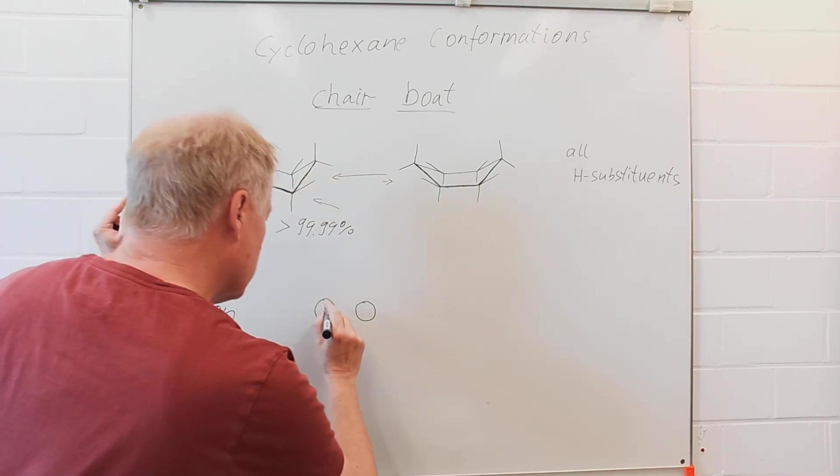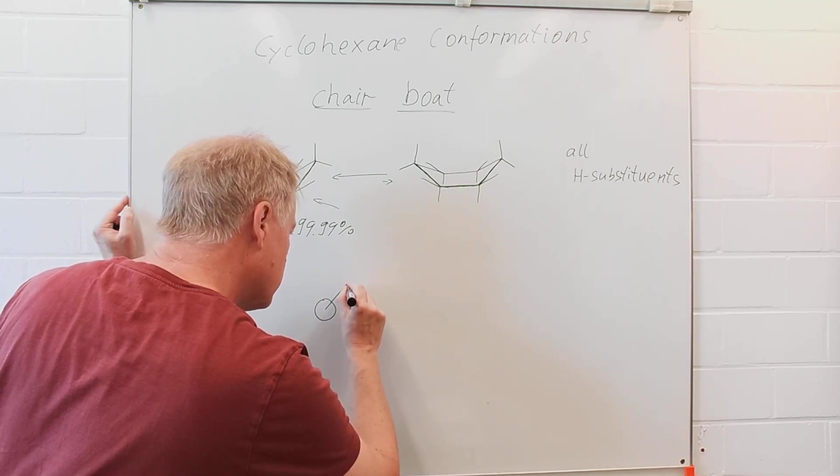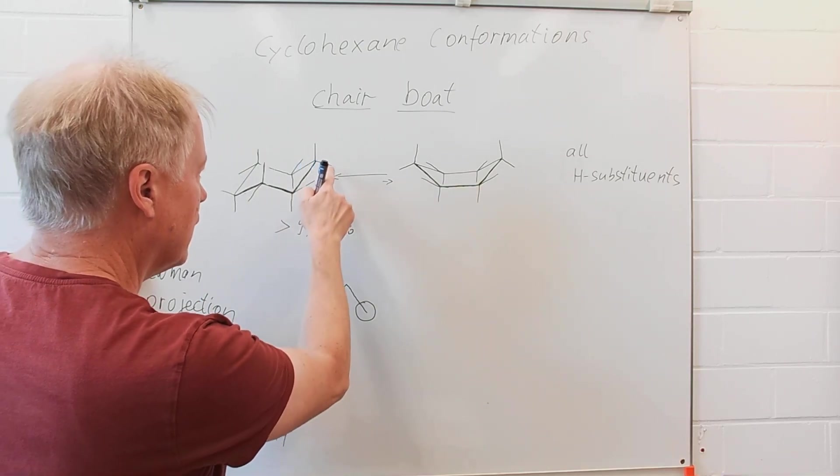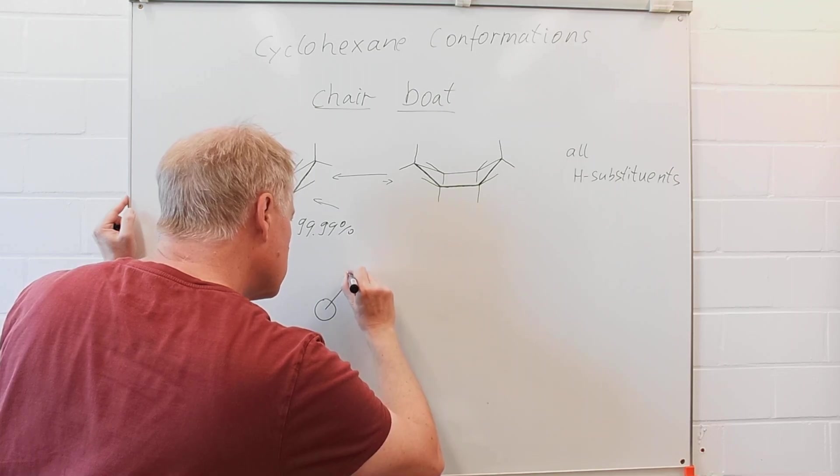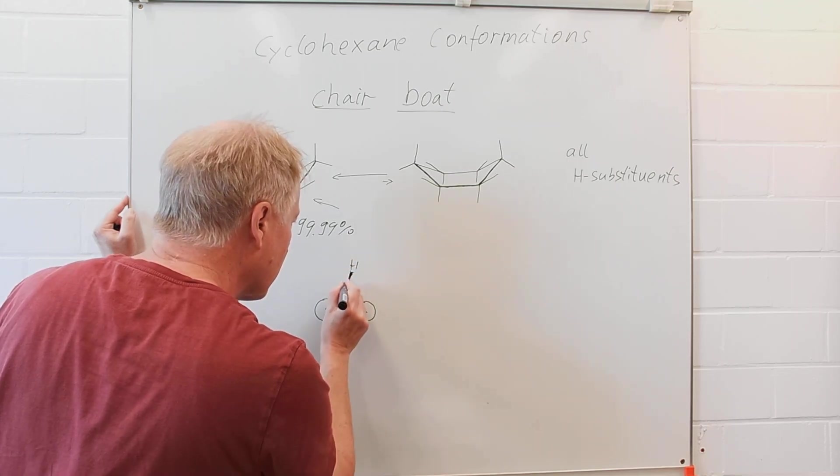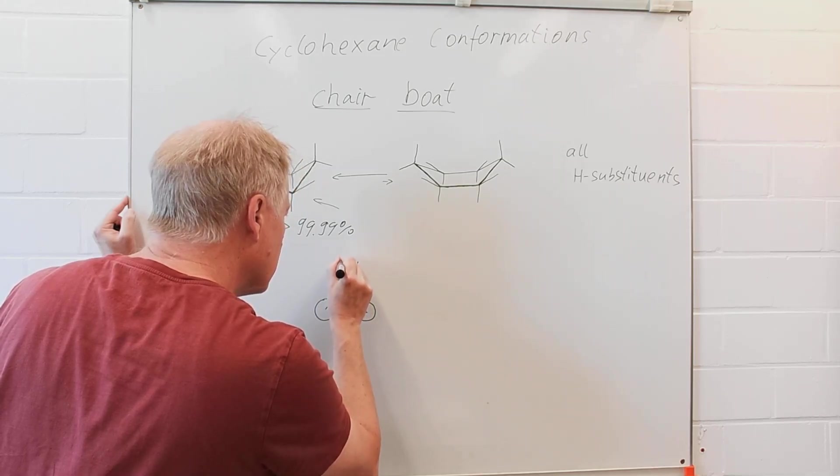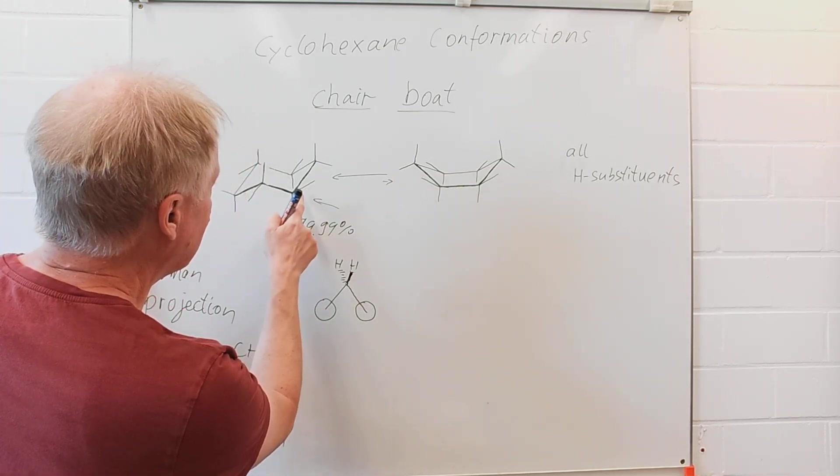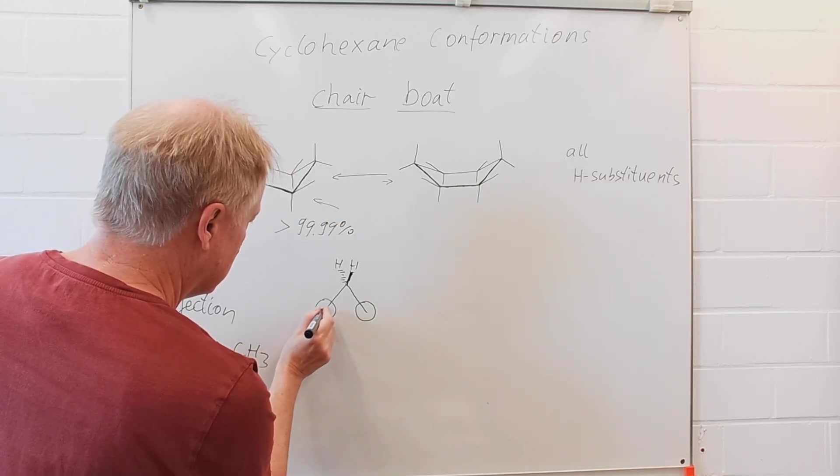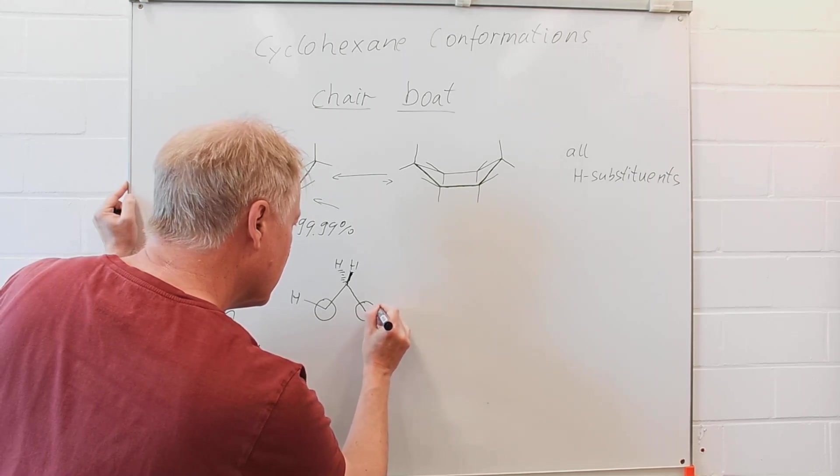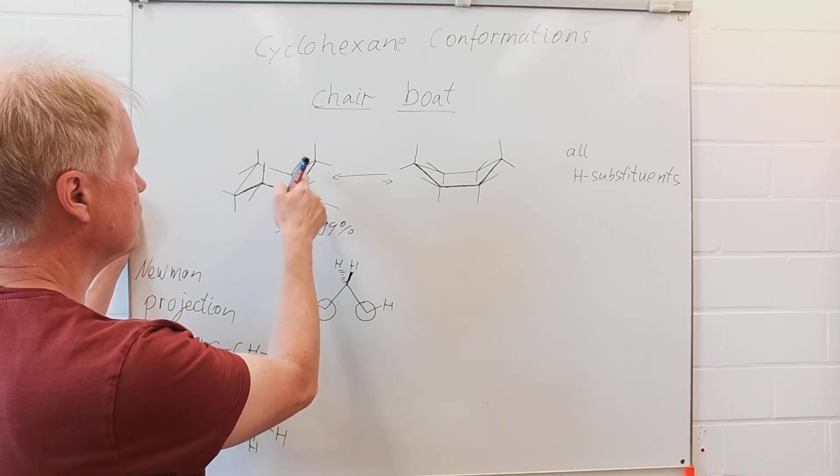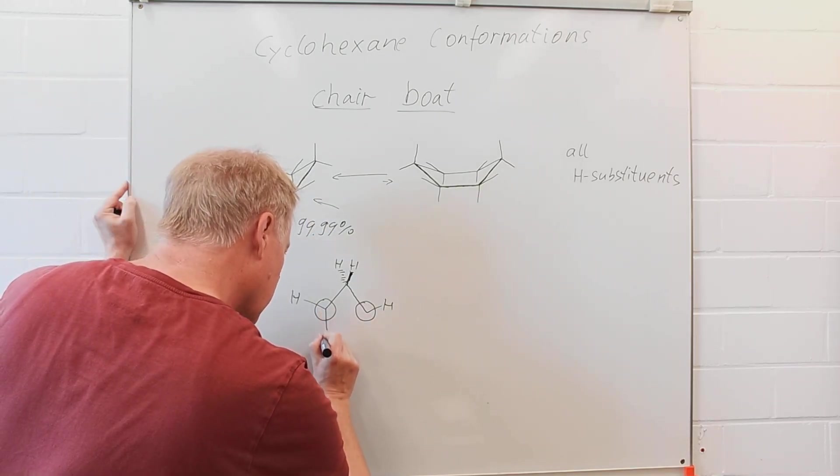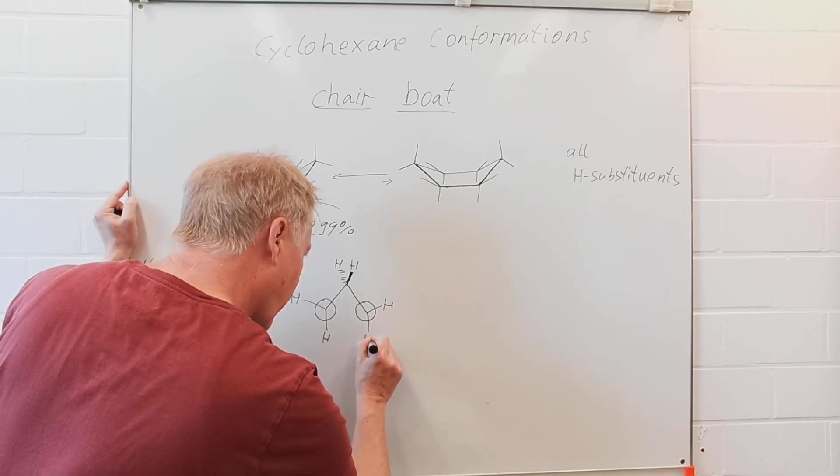We would notice there we have that bridge, this methylene bridge with one hydrogen looking towards us and the other one pointing away from us. Then we have these equatorial hydrogens, this and that, and those two axial hydrogens, this one and that one.